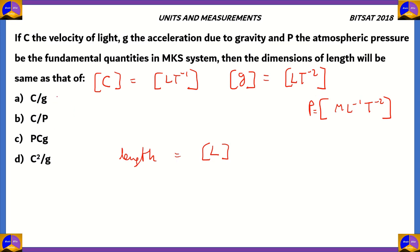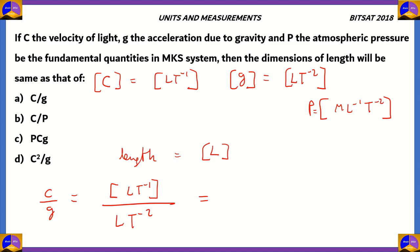Let's look at c by g — that's option A. Basically, here we have to divide L·t⁻¹ by L·t⁻². The length gets cancelled, t⁻² goes to the top and becomes t². So t² times t⁻¹ gives you just time. So c by g gives us dimensions for time. That means option A is incorrect.